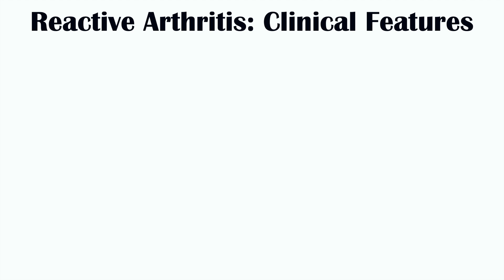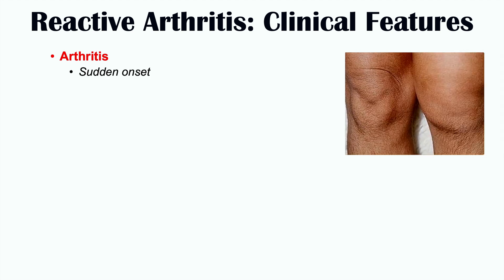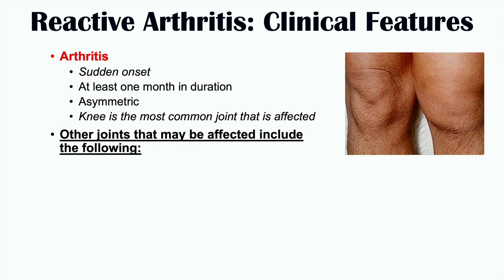The signs and symptoms of reactive arthritis include, as the name suggests, arthritis — joint inflammation. It is typically a sudden onset of arthritis that usually lasts at least one month in duration. The arthritis is asymmetric, occurring on one side of the body. The knee is the most commonly affected joint, though other joints may be affected as well, including the axial spine, which occurs in about 10% of cases.